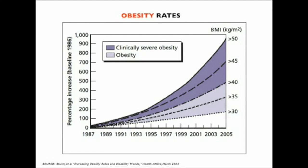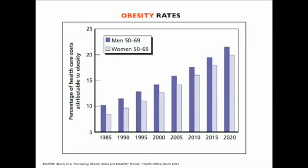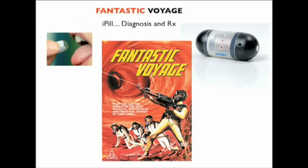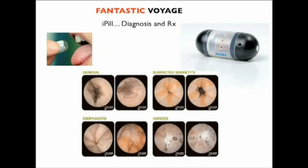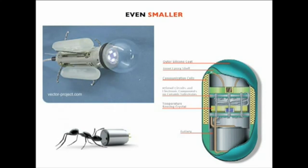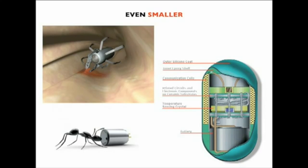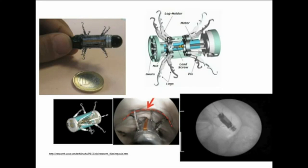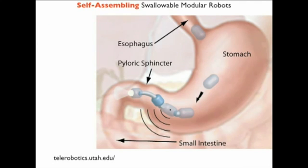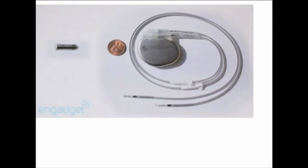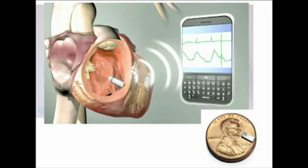The trend in medicine is to get exponentially smaller. We're now in the era of Fantastic Voyage — the eye pill. You can swallow this completely integrated device, take pictures of your GI system, and help diagnose and treat as it moves through your GI tract. We're going to even smaller micro-robots that will eventually autonomously move through your system. On the cardiac side, pacemakers are getting smaller and much easier to place, wirelessly telemetered to your mobile devices. Here's one in prototyping by Medtronic that's smaller than a penny.